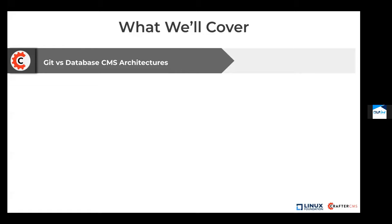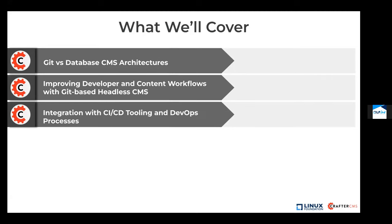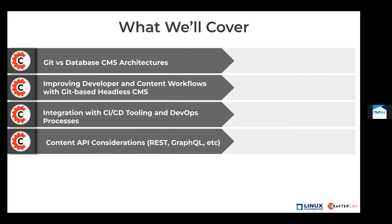First, we're going to make a bit of a comparison between Git-based and database-backed CMS platforms and try to understand where some of the issues are with traditional underpinnings and how Git-based platforms can address those issues. Then we're going to discuss how we can improve developer and content author workflows using Git. After that, we'll look at how we can integrate our CICD process and the DevOps processes that we have with content to achieve higher efficiencies while we're innovating. After that, we'll go on to touch on some APIs and why they're essential with a Git-based headless CMS.